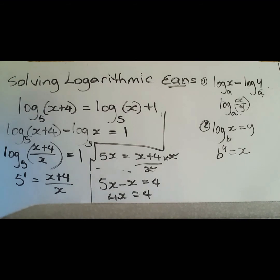So as you could see we have 4x which is equal to 4. Dividing both sides by 4, we could see now that x is equal to 1.